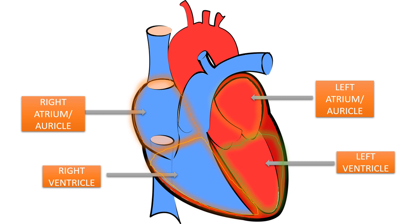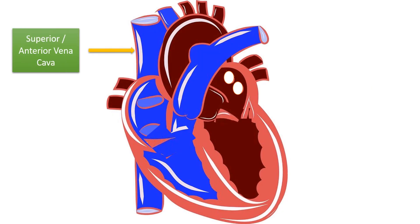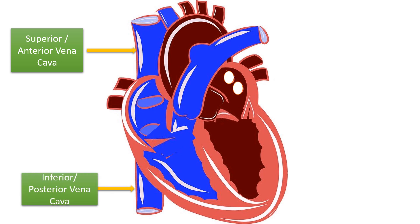Now let us see how blood enters and leaves the heart. Two blood vessels called the superior vena cava and the inferior vena cava bring the deoxygenated blood from all the parts of the body into the right atrium.